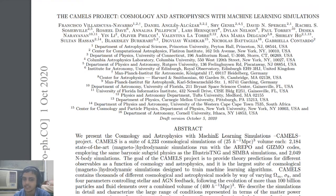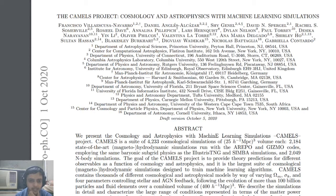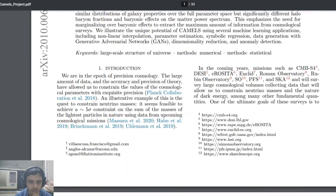CAMELS is a collection of 4,200 simulations of a 25 megaparsec cube — that's the size of the part of the universe they're simulating, homogeneous in volume. They are using magneto-hydrodynamic simulations that run with two codes, which I'll talk about soon.